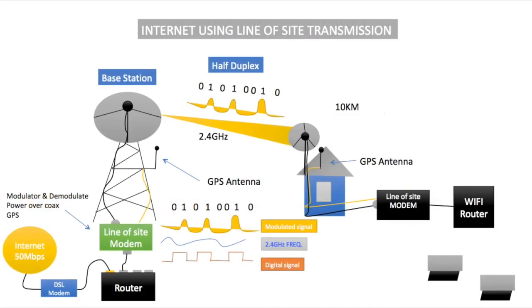Some ISPs are starting to use wireless services to get high-speed Internet to remote areas. I'll use this example here to show you exactly how that works. Here we have an Internet signal of 50 megabits per second coming from your ISP. They're using a DSL line to get that signal to the base station, which is connected to a router. Our purpose is to get that signal to the remote location.